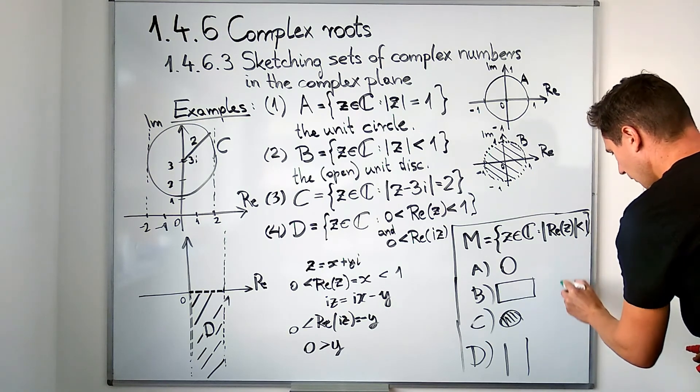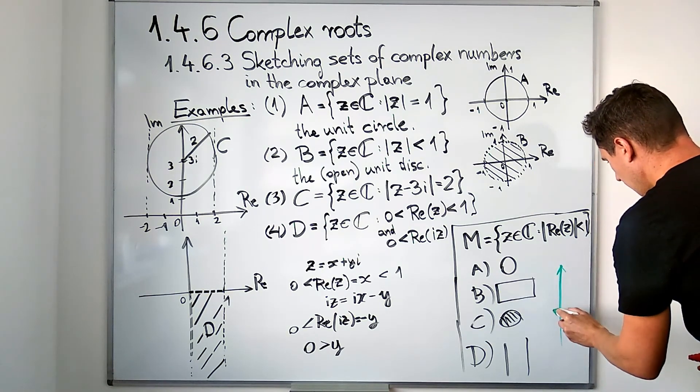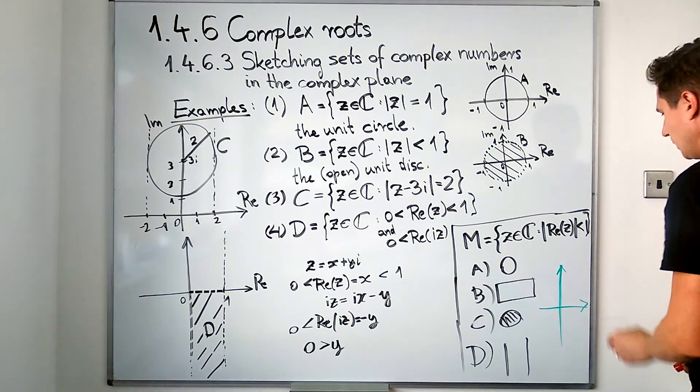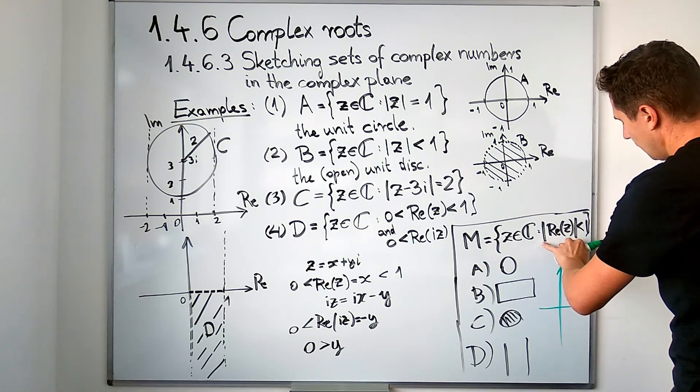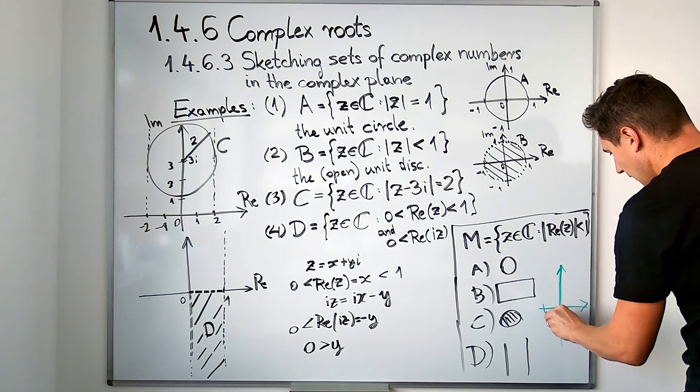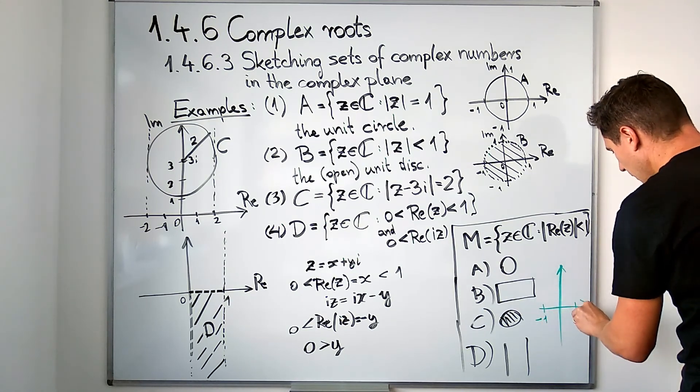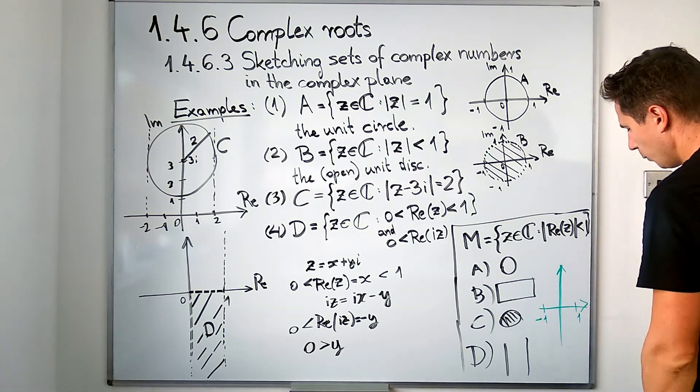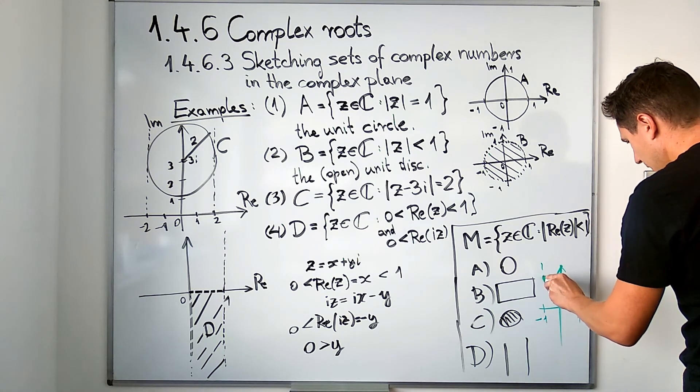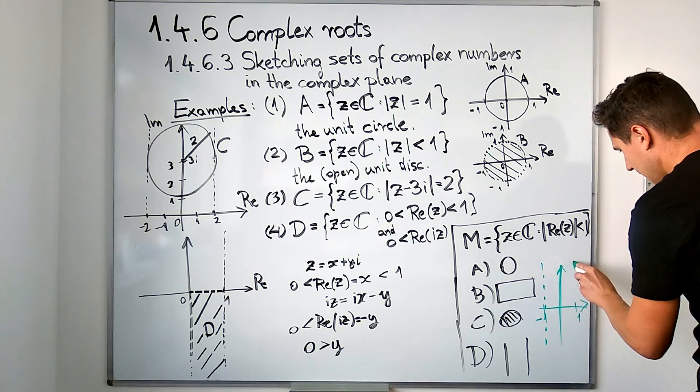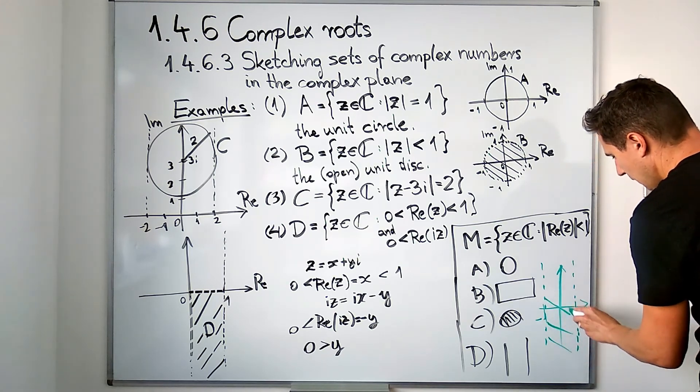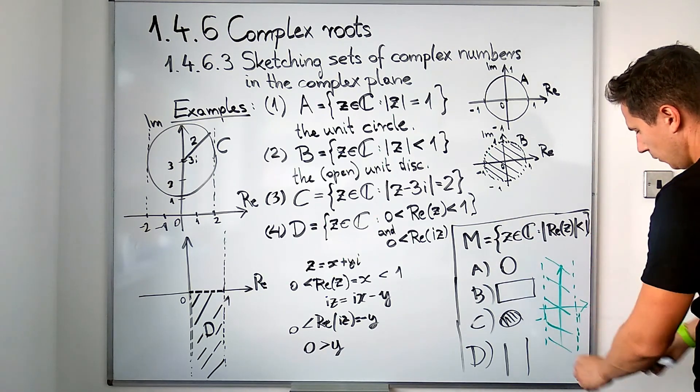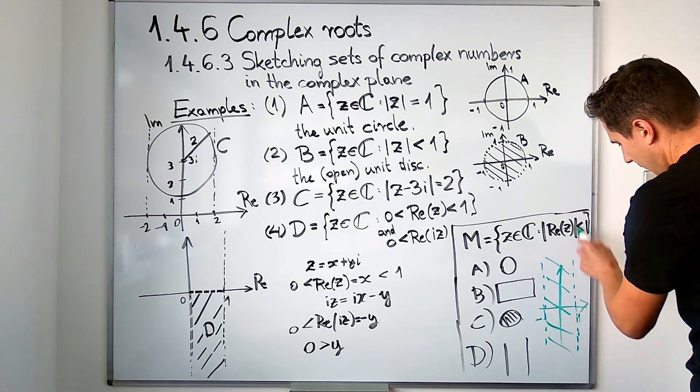I hope you have sketched out the set and found that this set must be the following. In order to have complex numbers with real parts with absolute value less than one, that means the real parts have to be between negative one and one, but there is no other constraint.